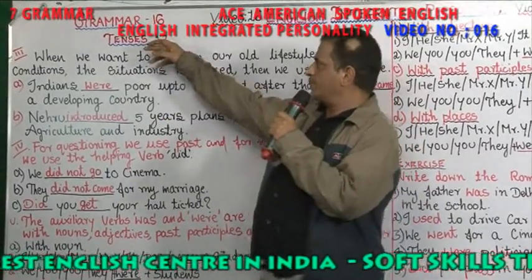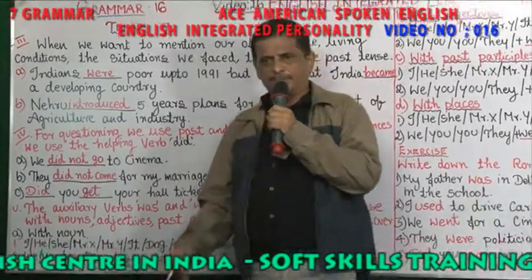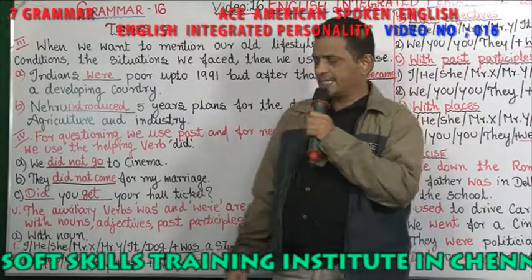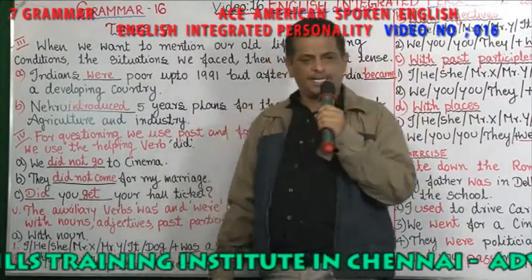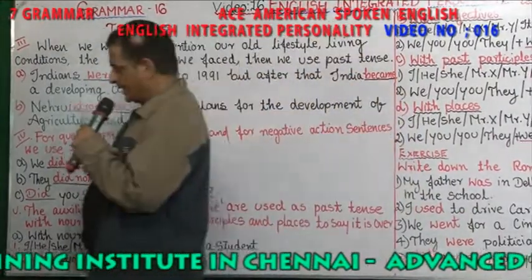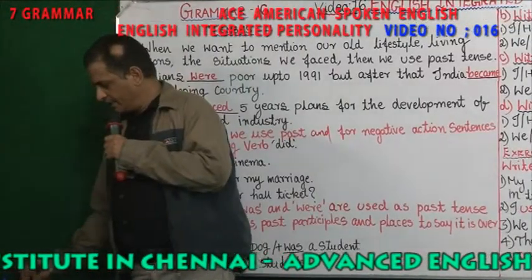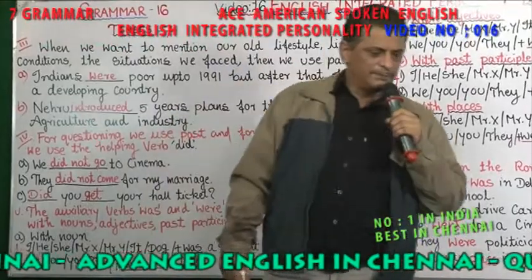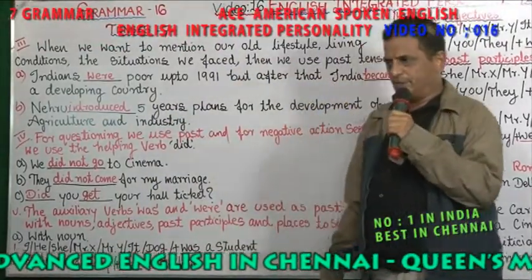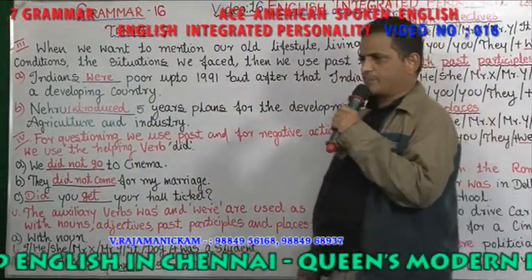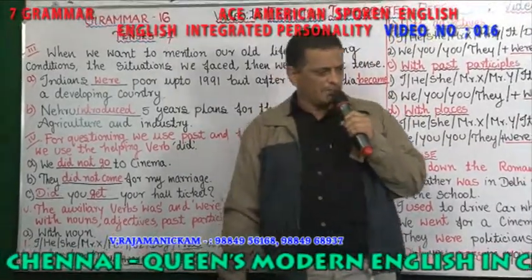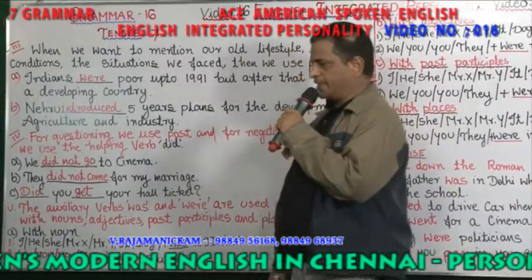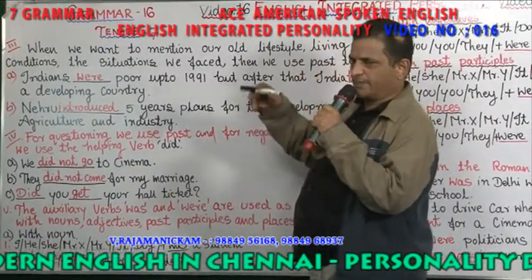Now, coming to this book — grammar part, video number 16. We have come to the tenses. We have seen about present tense, past tense, and future. Earlier we covered articles, then prepositions, then tenses. Tenses have four divisions each: present tense, past tense, and future tense. In present tense we covered ordinary present tense, and now we come to ordinary past tense.